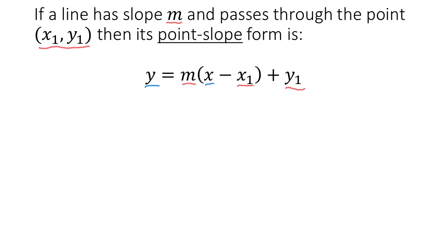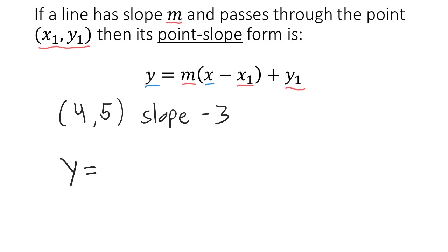Let's see this form in action. Suppose we know a line goes through the point (4, 5) and has a slope of negative 3. We can use the point-slope form to come up with an equation for our line. It would look like y equals negative 3 times (x minus 4) plus 5. So this would be the point-slope form of our line.